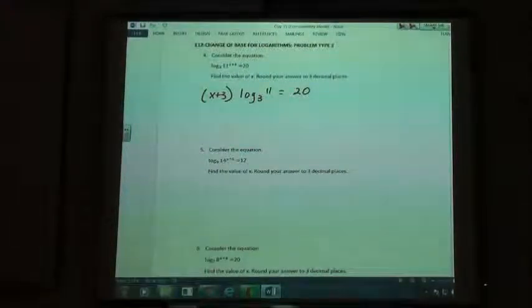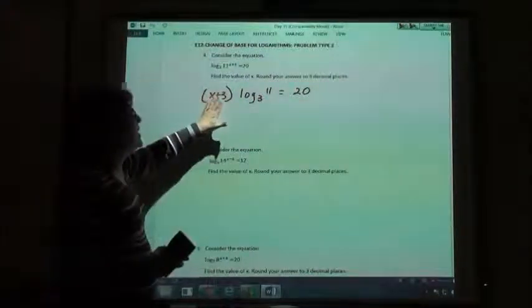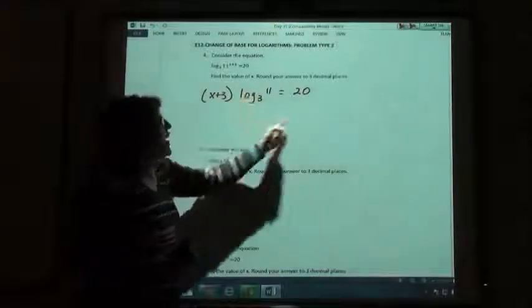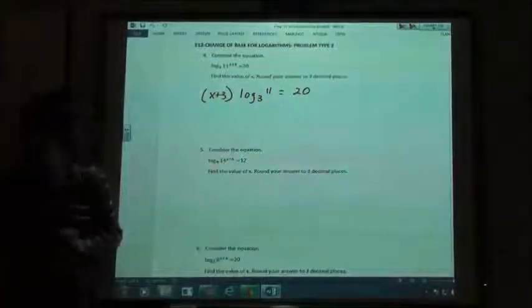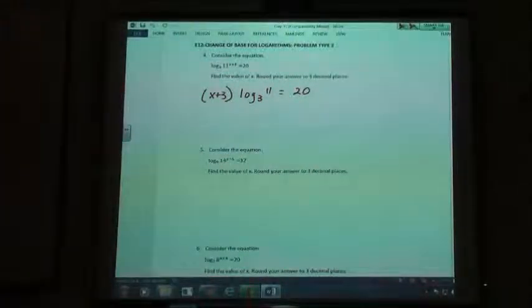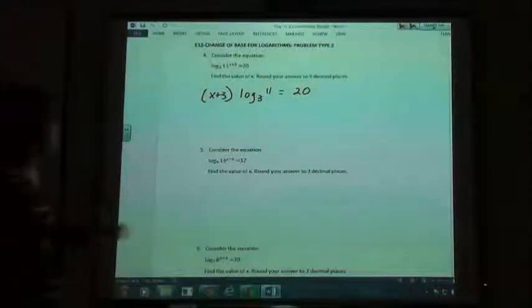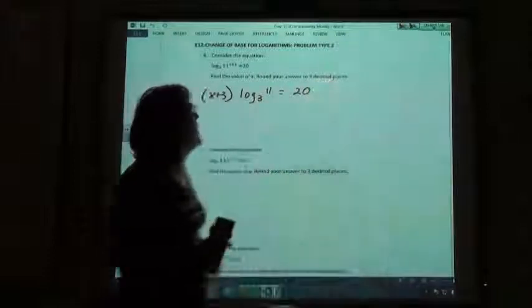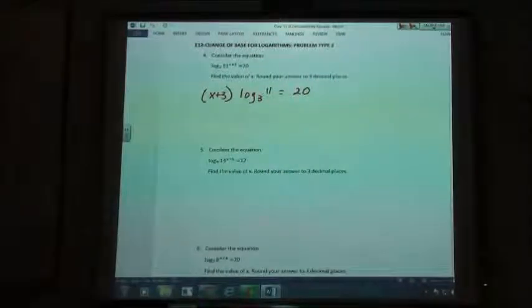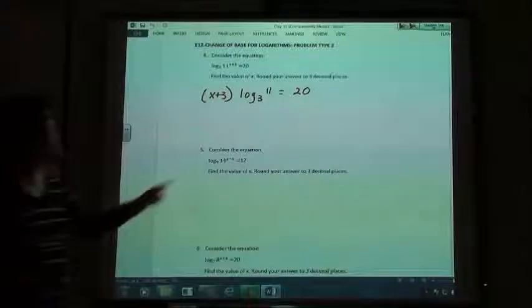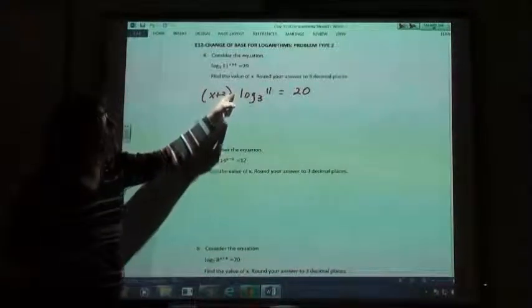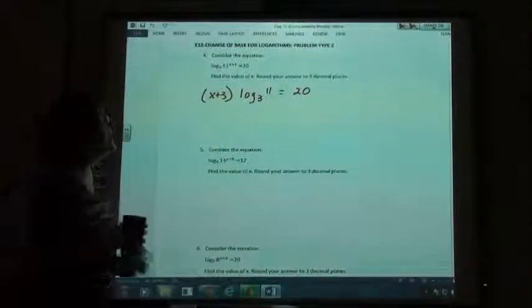Now, if I want to solve this, I want to get this by itself. What do I do to move that to the other side? Do you want to move the log 3 to the 20? Yes, I want to move this over here to the other side. Are you going to plus? No. Minus? No. Divide? Yes, because this is multiplying. There's no plus or minus sign in between. It's a multiplying.